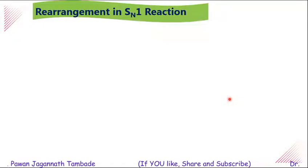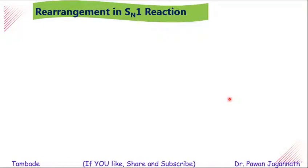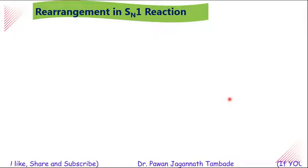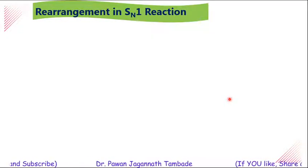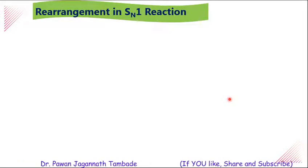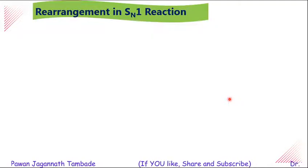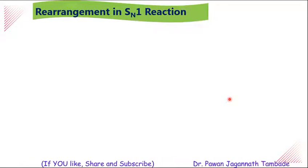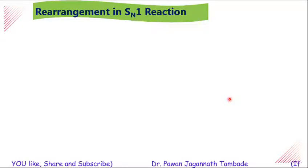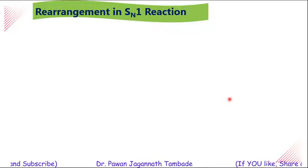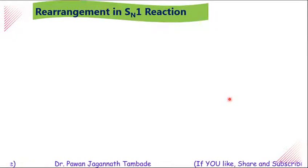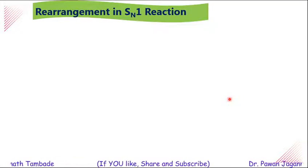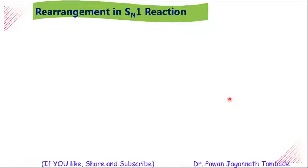Rearrangement in SN1 reaction. We know that in SN1 reaction there is a formation of carbocation intermediates, and we also know about the stability of these carbocation intermediates. In general, tertiary carbocations are more stable than secondary, and secondary are more stable than primary. After formation of a carbocation, if there is a possibility of forming a comparatively more stable carbocation by means of some rearrangement, then such rearrangement occurs during the course of nucleophilic substitution reaction, and as a result we can have a totally different product.